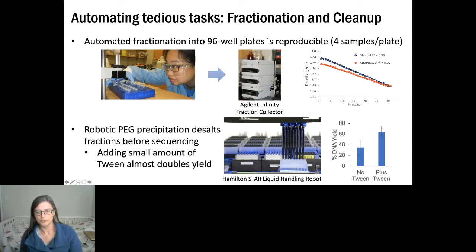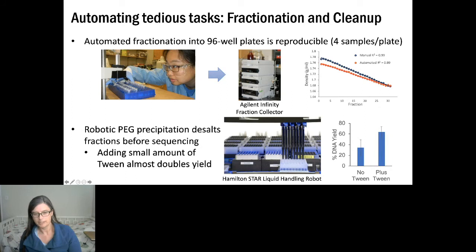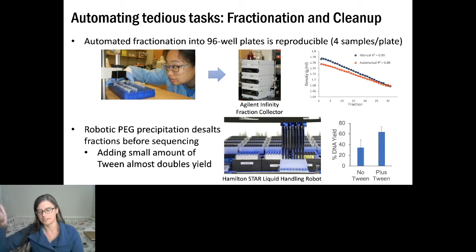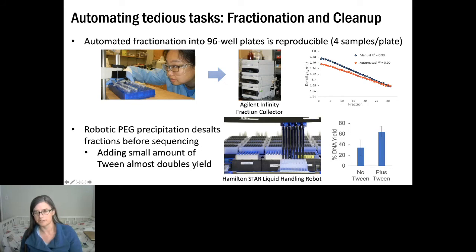Once in the plate, we move to a Hamilton STAR robot for desalting. We found PEG precipitation works better than magnetic beads for getting better yields. Recently, an insight emerged that adding a small amount of surfactant — in our case Tween — helps increase yield by preventing DNA from sticking to the tube. When adding a tiny bit of Tween, we're nearly doubling our yield, and this was confirmed across about 30 to 60 replicates per condition.